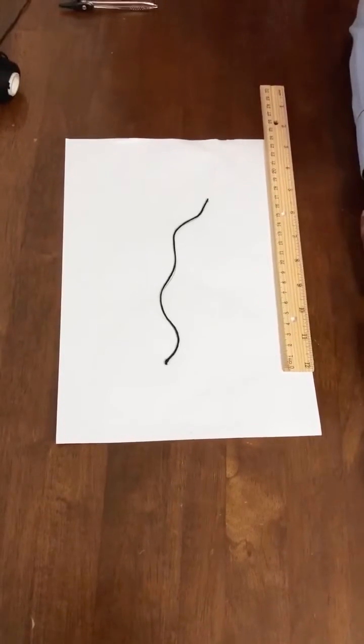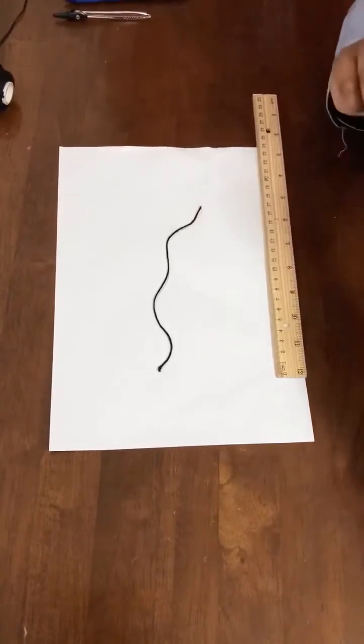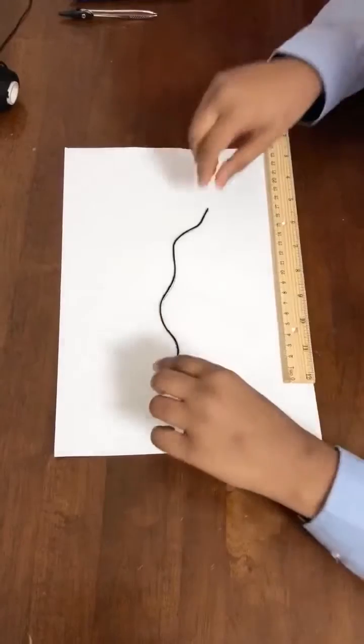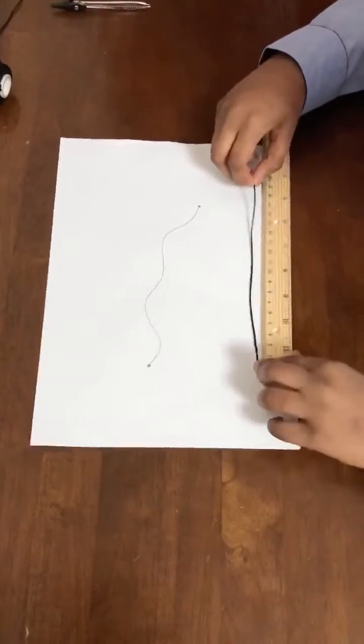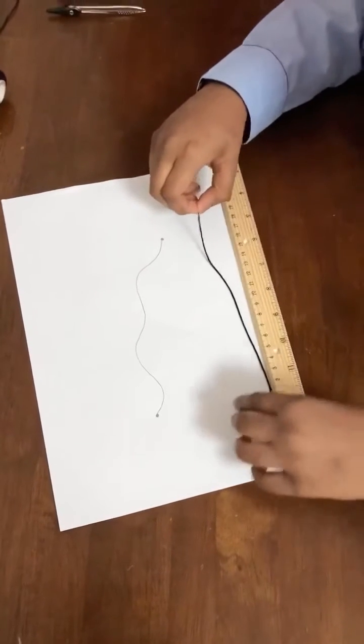After you align your thread with the curved line perfectly, then take your thread and stretch it. Then you have to measure it using your scale.